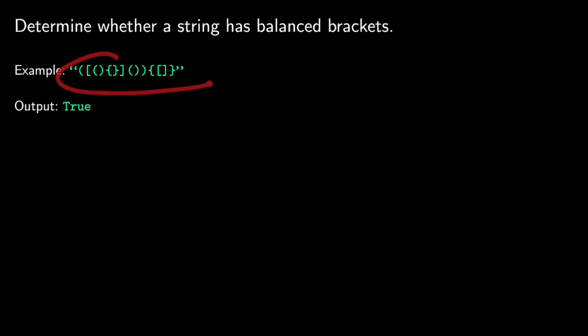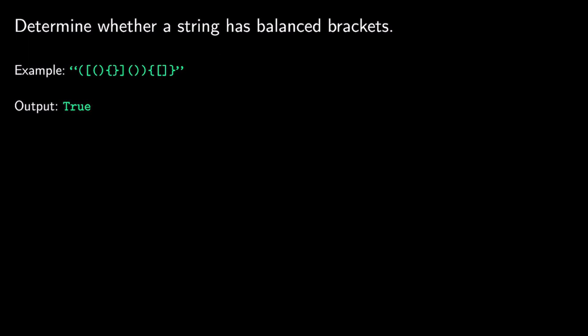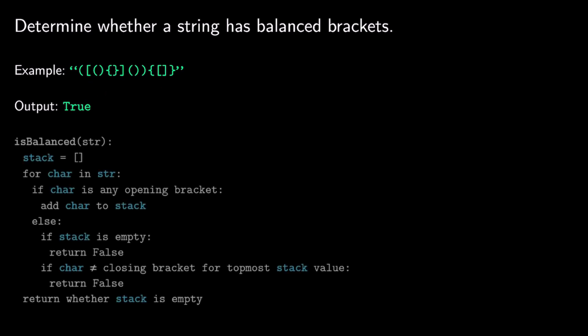For example, we start with an open parenthesis, then an opening square bracket, then another open parenthesis, but the closing bracket that follows is a closing parenthesis. If instead we had a closing square bracket there, that would not qualify as a balanced string — it would be incorrect. Also, if we go through the entire string and end up with more closing brackets than opening brackets, the string is not balanced.